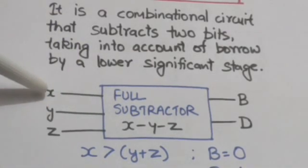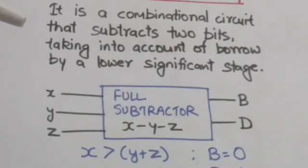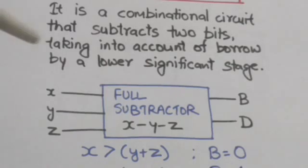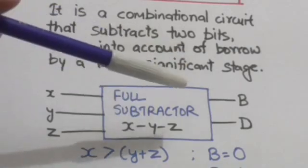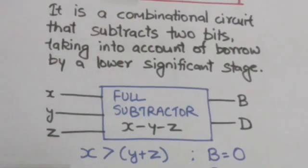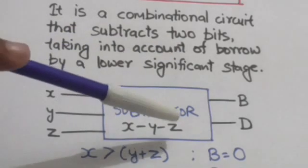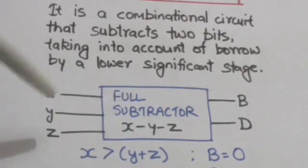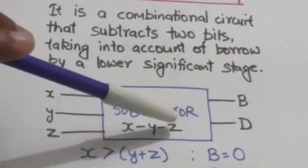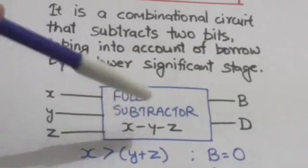So we have to subtract Y from X, where Z denotes the borrow by a lower significant stage. If Z equals 1, then we will also subtract Z from X. The full subtractor will subtract Y and Z from X. When Z equals 0, this expression reduces to X minus Y — if there is no borrow by a lower significant stage, the full subtractor simply subtracts Y from X.